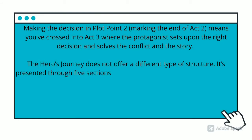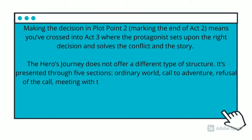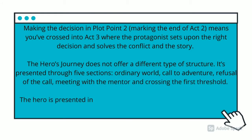Plot point 2 marks the end of act 2 and leads into act 3, where the protagonist makes the right decision and solves the conflict. The hero's journey offers a different type of structure, presented in five sections: ordinary world, call to adventure, refusal of the call, meeting with the mentor, and crossing the first threshold.